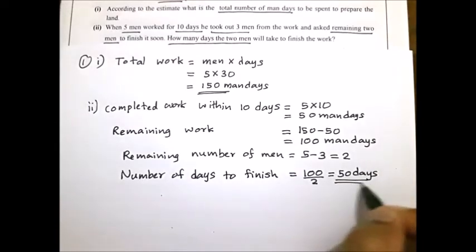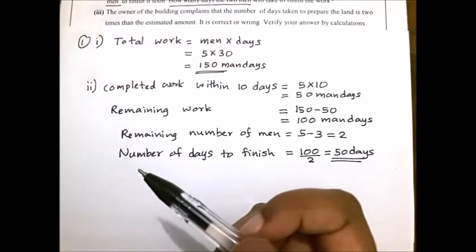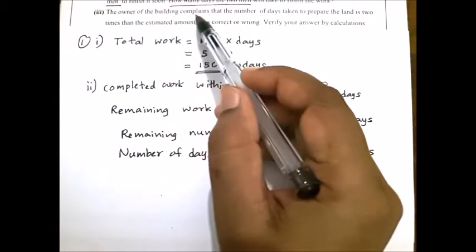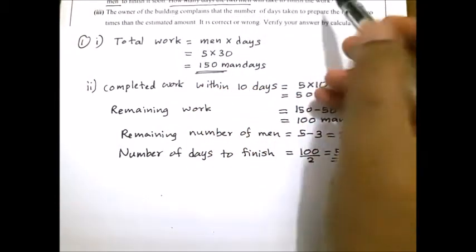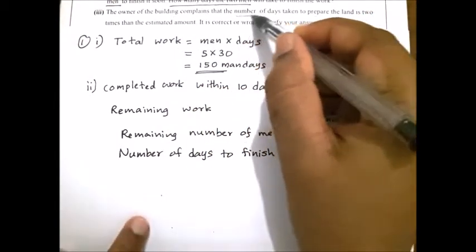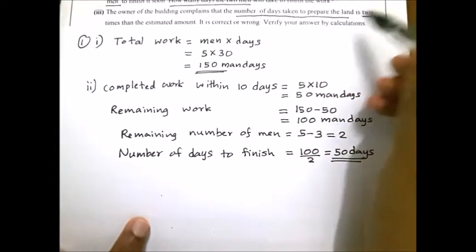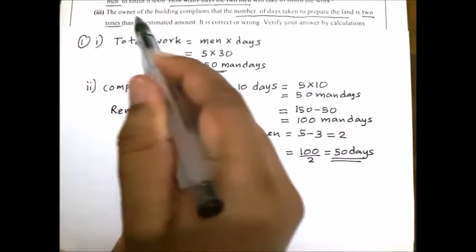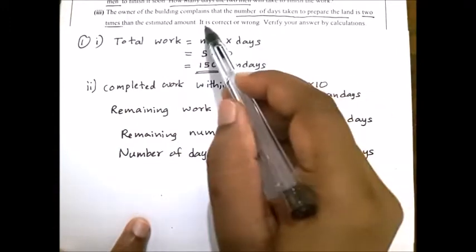This is the answer for the second part. Look at the third part. One of the building owners complains that the number of days taken to prepare the land is two times the estimated amount. Is it correct or wrong?